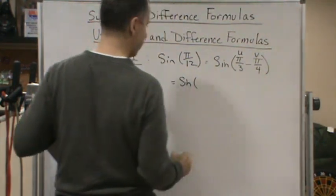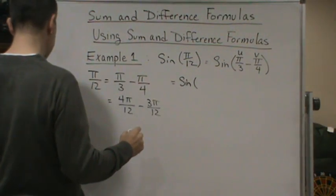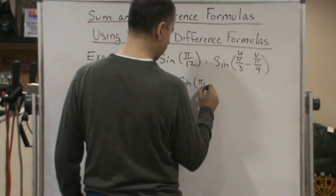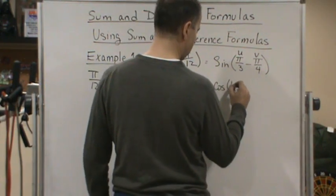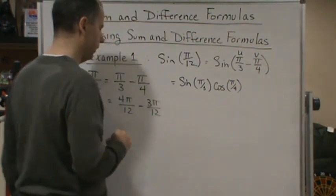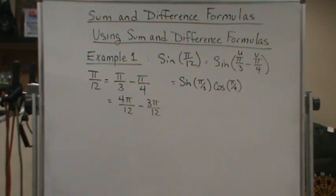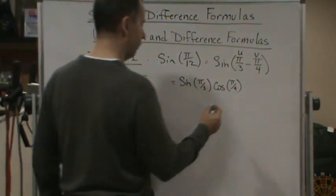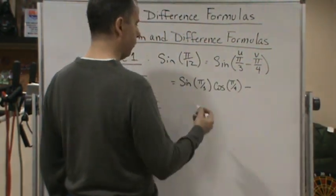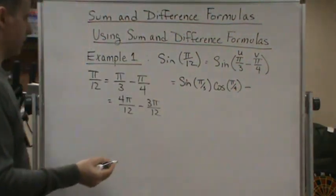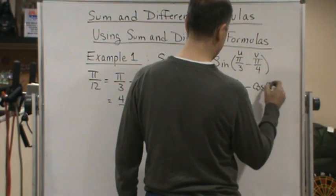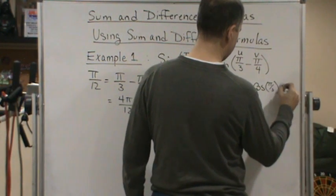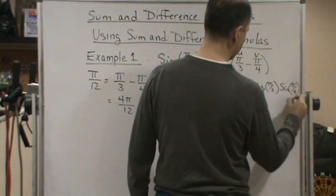We'll call this u and this v. So sine u, which is pi over 3, cosine v, which is pi over 4. And so since it's a subtraction, sine keeps the sign the same. So it'll be minus, and then we flip it, so then it's going to be minus cosine u times sine v, which is pi over 4.